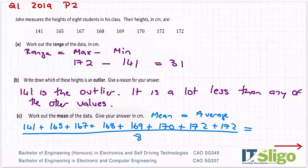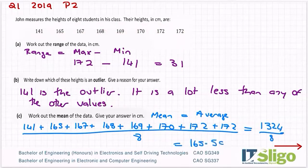Put that into your calculator. And you get 1324 over 8, which is 165.5 centimeters. So the average height. So when I look at the data, can you see it's down here?